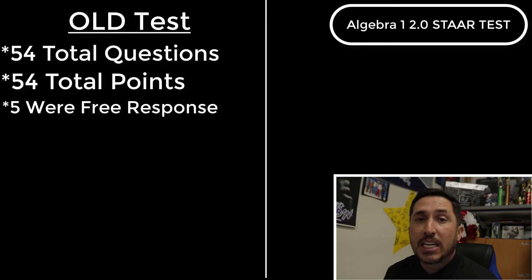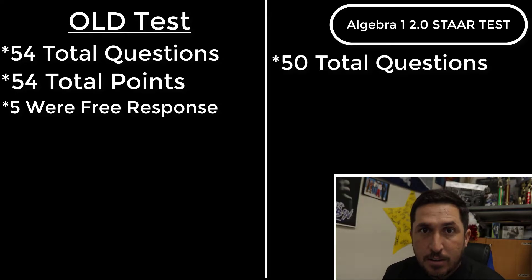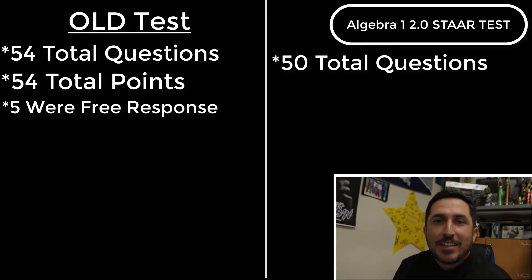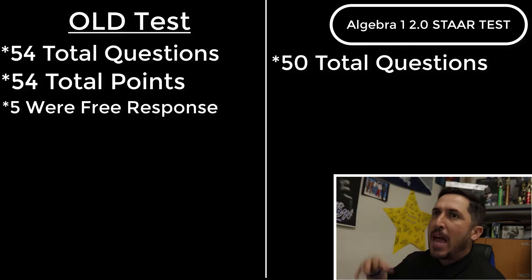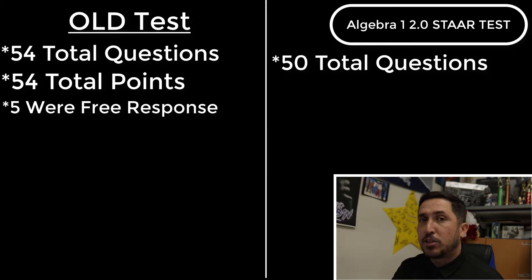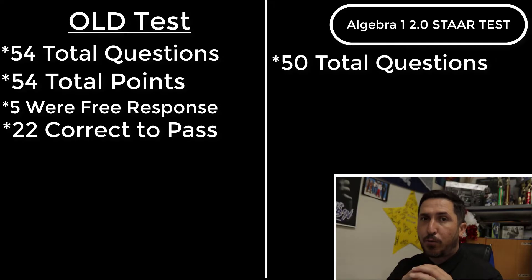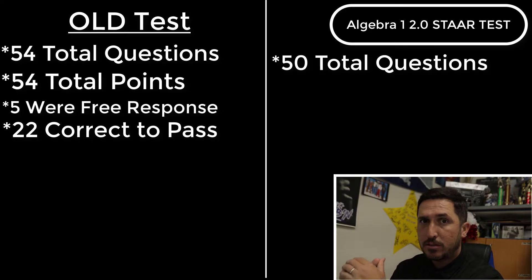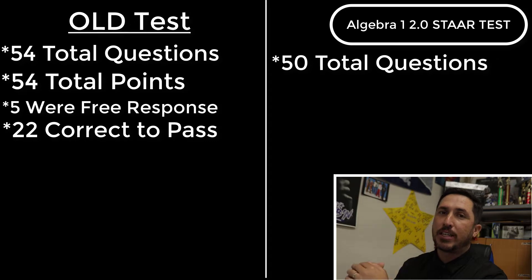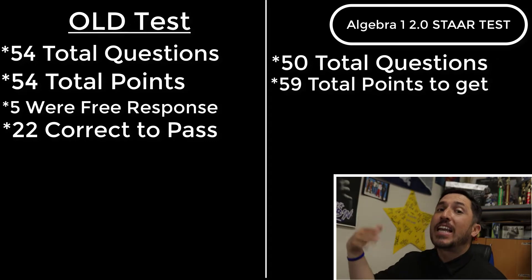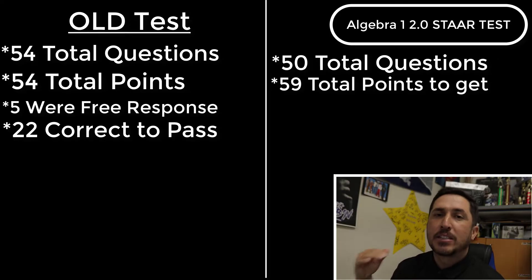Now this new test, instead of being 54 questions, it's now going to be 50. There are now only 50 questions on the STAAR test. You're going to ask, 'How many do I have to get right to pass?' On the old test you had to get about 41% to pass, so it was like 22-ish questions right. On this new test, yes there's 50 questions, but they are not all weighted the same. The old test was 54 questions worth one point each — 54 possible points. New test: 50 questions, 59 possible points. Why? Because some of the questions are worth two points.